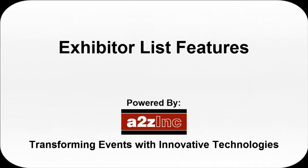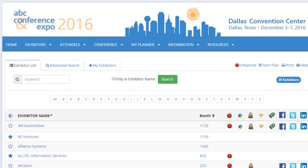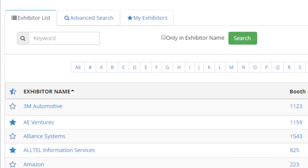The Exhibitor List offers many planning tools that can help you to plan for a more efficient on-site visit. The Exhibitor List allows you to search for exhibitors and or products of interest by keyword.